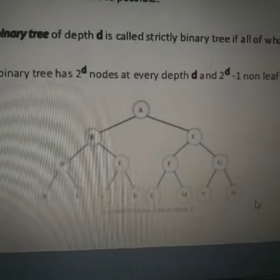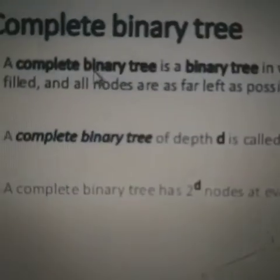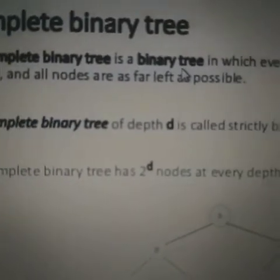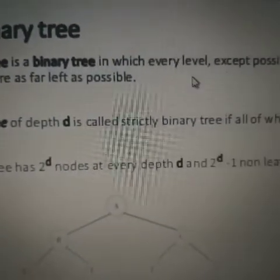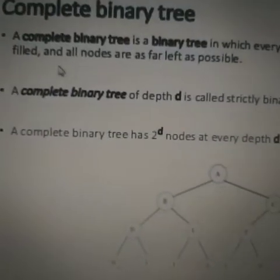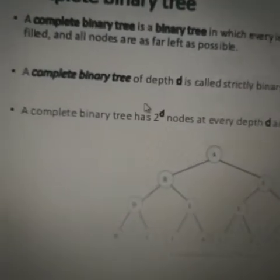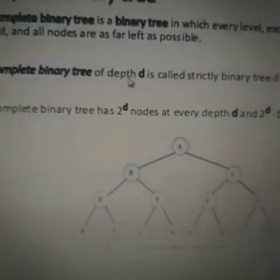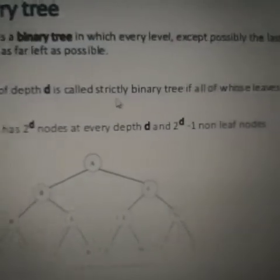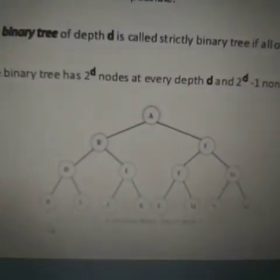So every node has specifically two children except the last level - excluding the last nodes at the end, the leaf nodes. Complete binary tree is a binary tree in which every level except possibly the last is completely filled and all the nodes are as far left as possible.